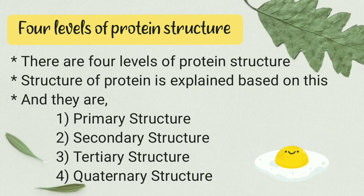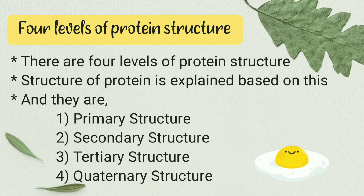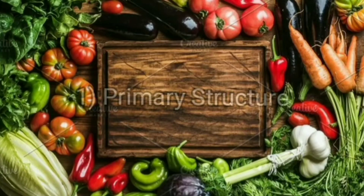There are mainly four levels of protein structure. The four levels are: primary structure, secondary structure, tertiary structure, and quaternary structure.